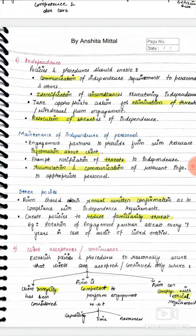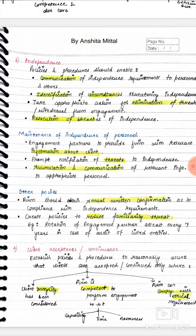Next requirement is client acceptance or continuance. The difference: acceptance applies when you are taking an initial audit engagement — auditing a company for the first time. For recurring audits, you consider continuance — whether to continue the engagement from the previous year. So 'acceptance' is for initial audit, and 'continuance' is for recurring audit.